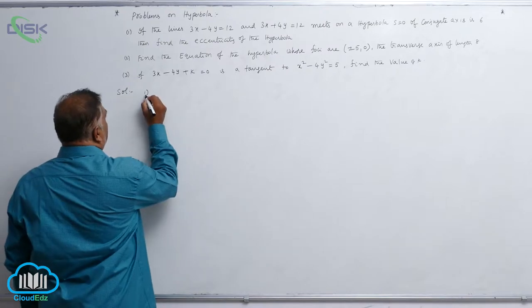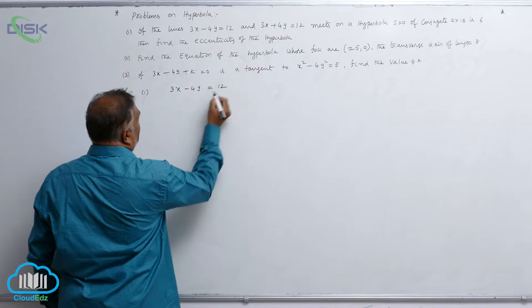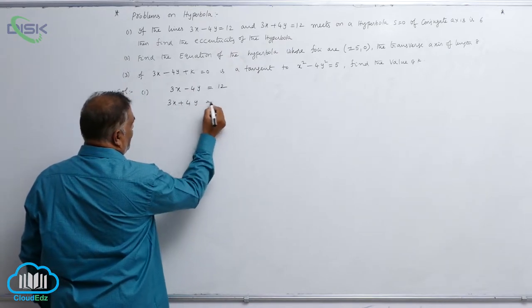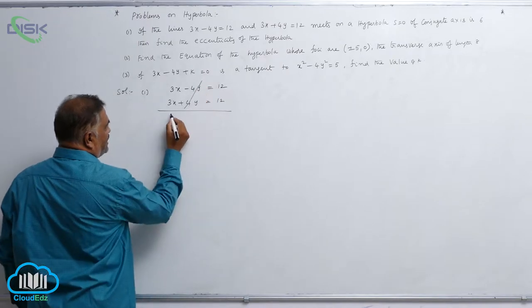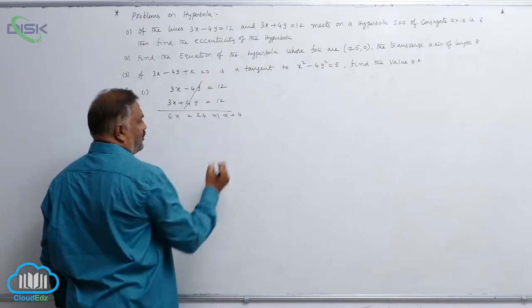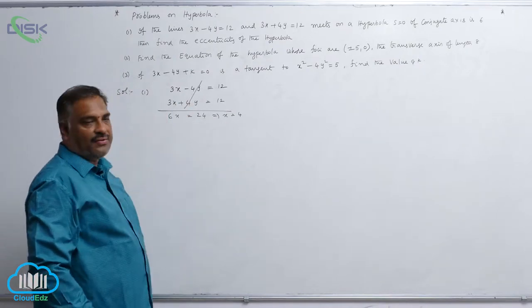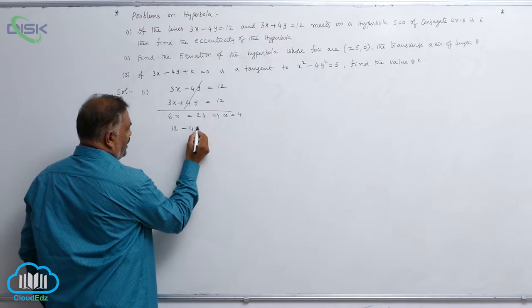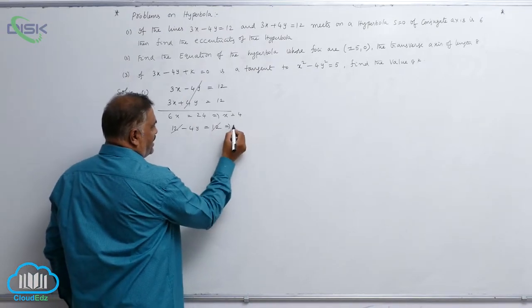The given lines are 3x minus 4y equal to 12 and 3x plus 4y equal to 12. Solving these two equations: adding gives 6x equal to 24, so x equal to 4. Substituting x equal to 4 into the first equation: 12 minus 4y equal to 12, the 12s cancel, giving y equal to 0.